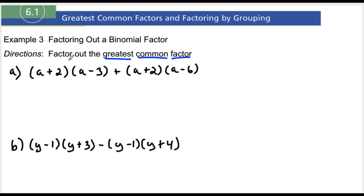I have my first term of A plus 2 times A minus 3 is my first term. And my second term is being A plus 2 and A minus 6. Notice that each term has a common factor of A plus 2. So they each have A plus 2. So that's going to be our greatest common factor.